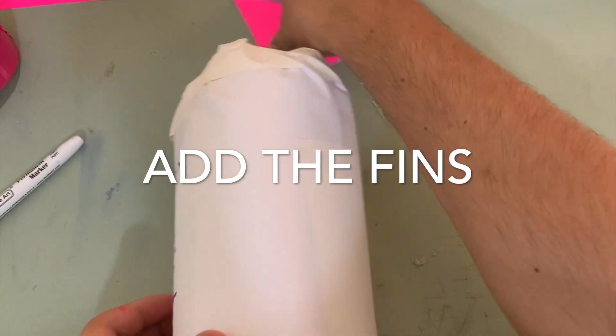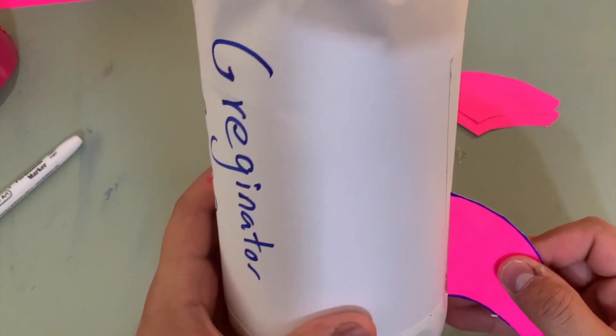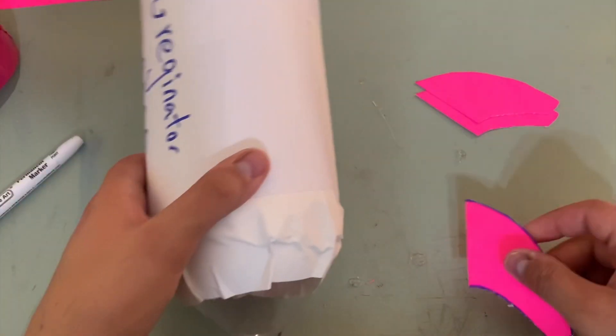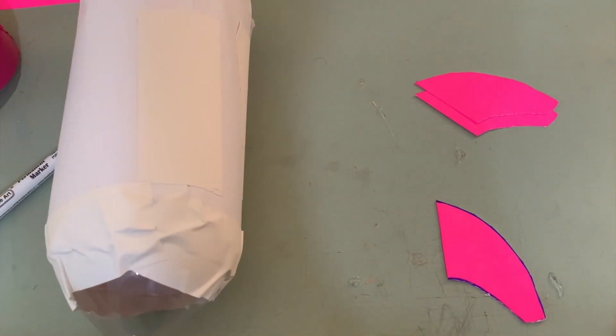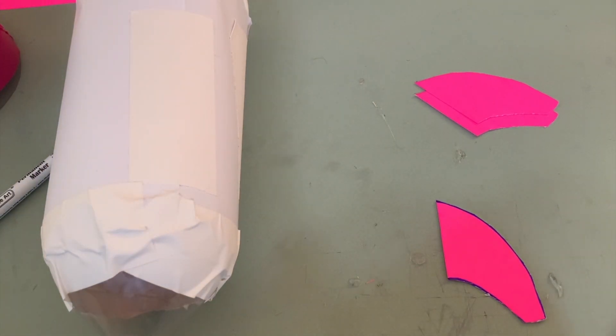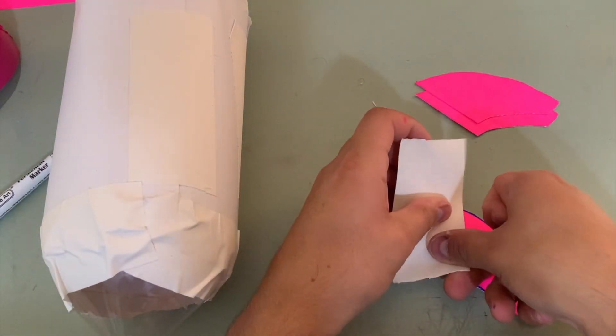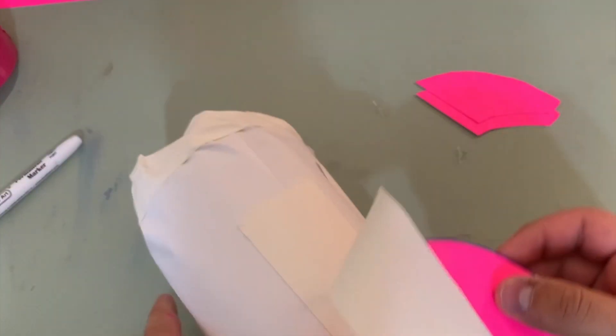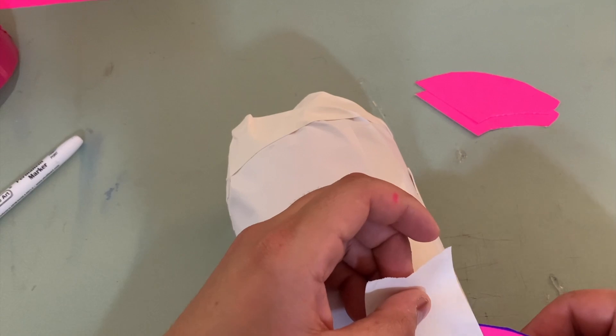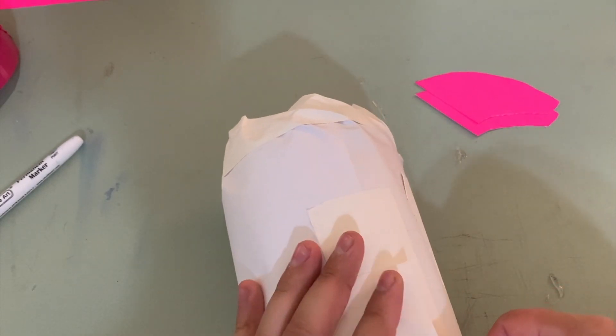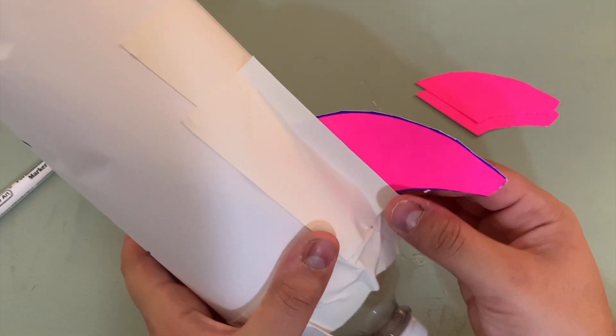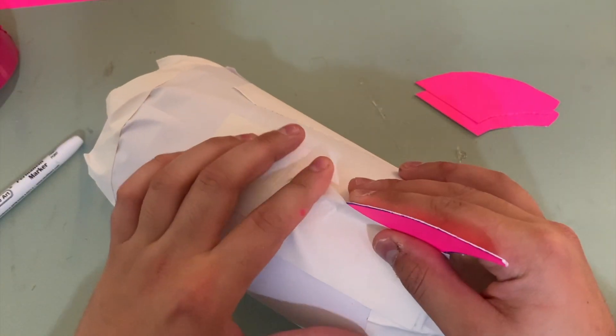Next step, we're going to go ahead and put our fins on. So what are the purposes of fins again? To provide stability. So step one to do this, because it is a little bit challenging. Take some tape. Apply tape to one side of the fin. Like so. Then place the fin on the end of your rocket that has the nozzle. Alright, just like that. So far so good.